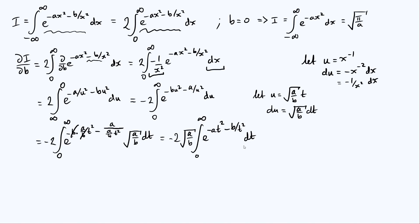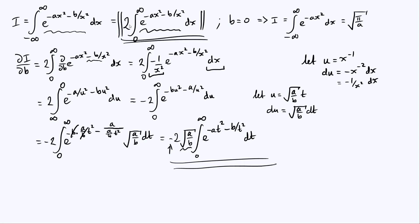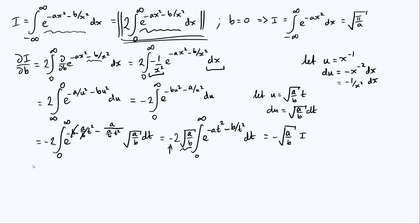We now have two times the square root of a over b times the integral from zero to infinity of e to the minus a t squared minus b over t squared dt. This is almost exactly what we started with — it's just twice the integral from zero to infinity of e to the minus ax squared minus b over x squared — so this equals minus the square root of a over b times I. It doesn't matter that we have t's instead of x's since that's just a dummy variable.